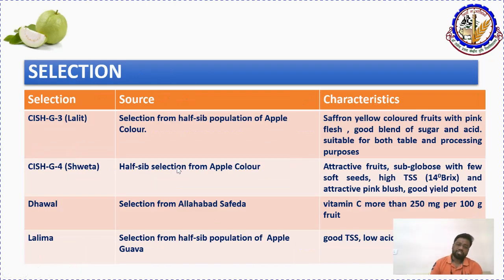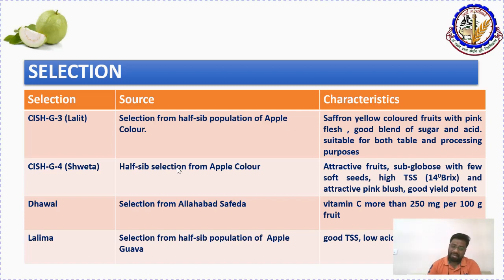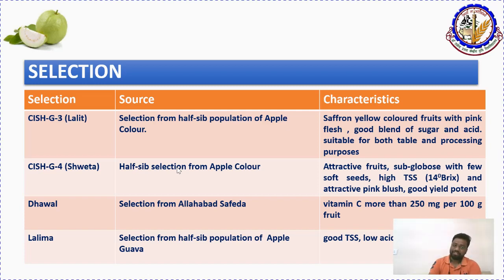The next approach is selection, which can be of two types: seedling selection or clonal selection. When selecting from a seedling population, that is seedling selection, which can be done from half-sib or full-sib populations. Clonal selection is done from a clonally propagated population. Since guava is a vegetatively propagated perennial fruit crop, when a superior plant is identified from a clonal population and selected for subsequent generations, that is clonal selection.